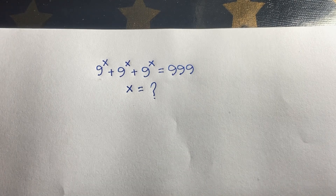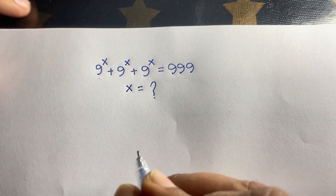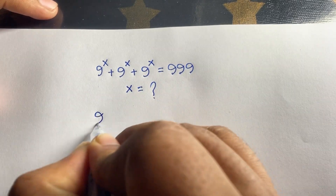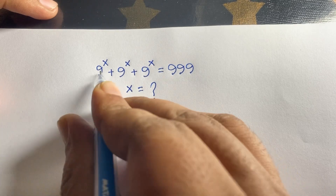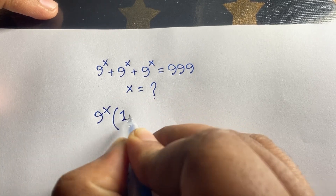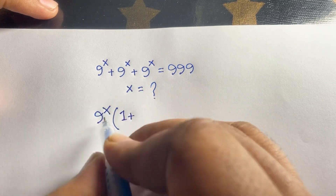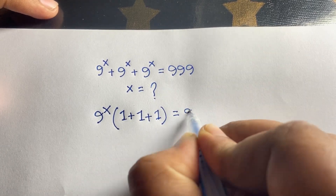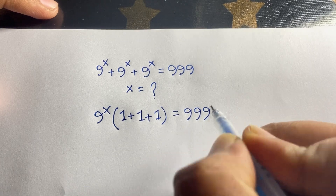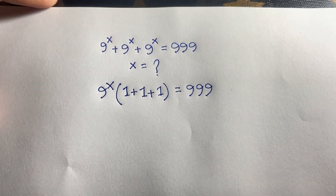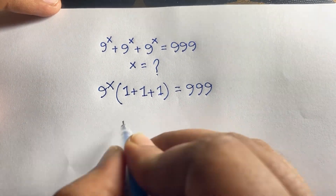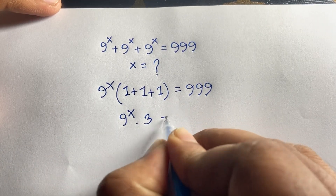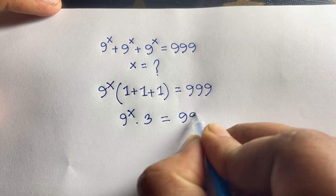How to solve this question? First of all, here we have 3 times 9 to the power x, since 9 to the power x is common on the left side. So 9 to the power x times 1 plus 1 plus 1, which equals 3, is equal to 999.